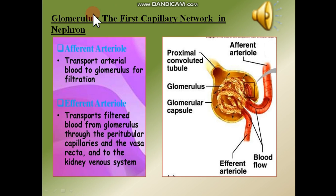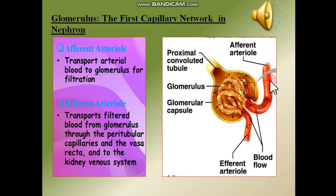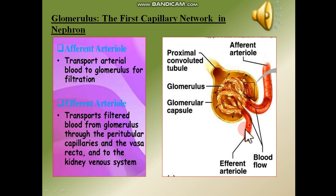The glomerulus is the first capillary network in the nephron. Afferent arterioles transport arterial blood to the glomerulus for filtration, and efferent arterioles transport filtered blood from the glomerulus through the peritubular capillaries and vasa recta to the kidney's venous system. Here you can see the afferent arteriole carrying blood into the glomerulus, and the glomerular capsule — a sac covering the glomerular capillaries. This is the proximal convoluted tubule, and the efferent arteriole carries blood back from the nephron after filtration.